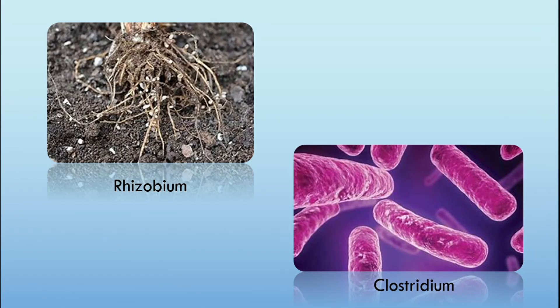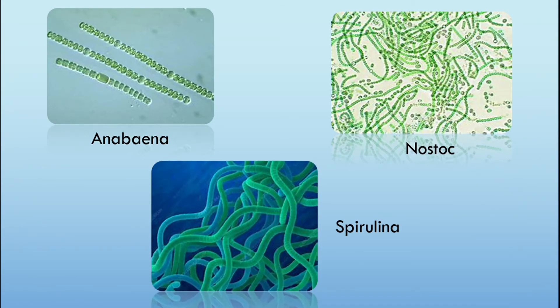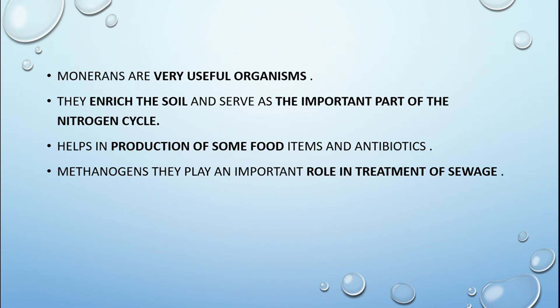Next comes cyanobacteria, also known as blue-green algae (BGA). They contain chlorophyll and can prepare their own food; phycoerythrin and phycobilin are also present in them. They are photosynthetic in nature, found in aquatic regions, and some organisms of cyanobacteria fix atmospheric nitrogen. Examples are Anabaena, Nostoc, and Spirulina.